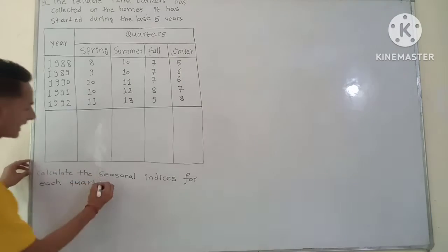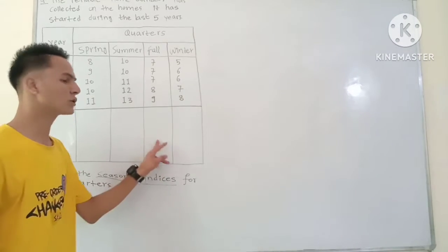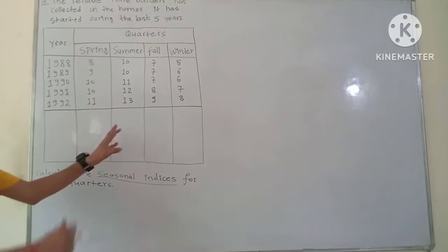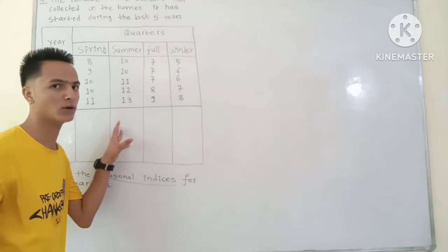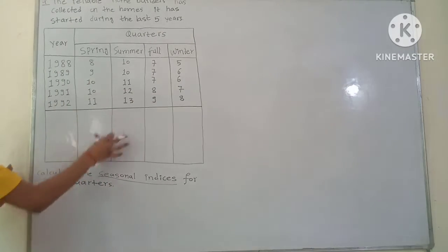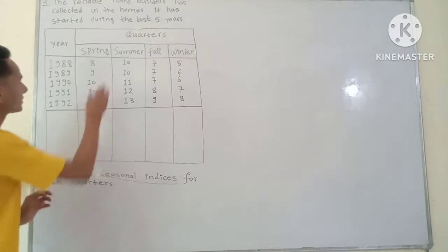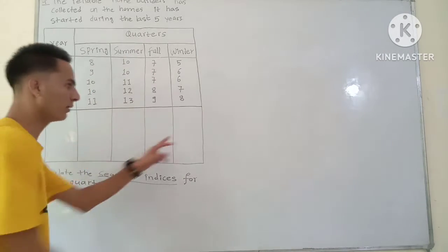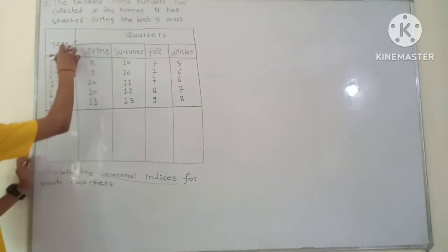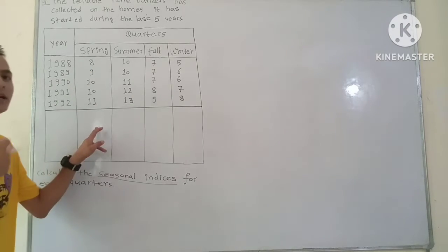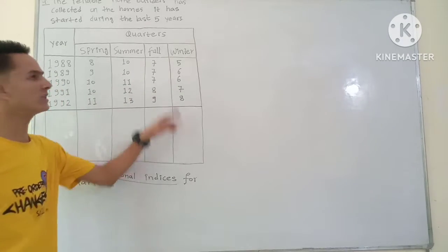We need to calculate the seasonal indices. We cannot jump directly to the seasonal index — first we need to understand some steps. The table has the quarters as columns. What we need to do is add the same quarter values across all years — so Spring values are added together, Summer values are added together, Fall values together, and Winter values together.